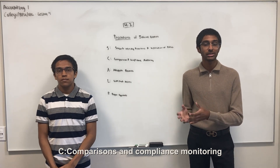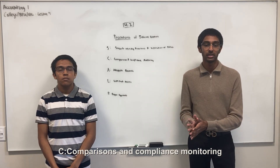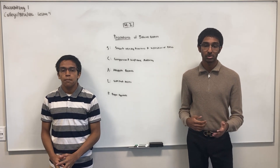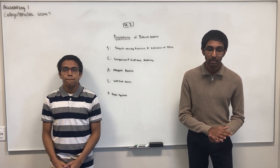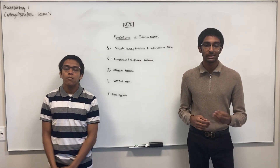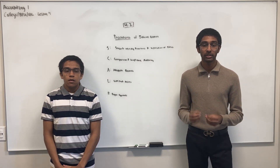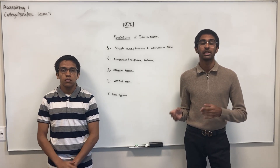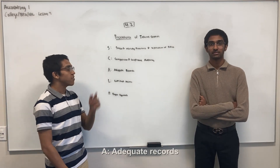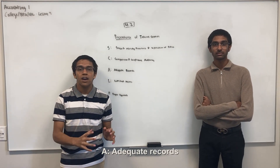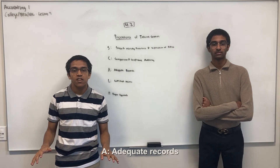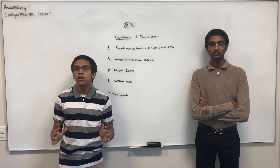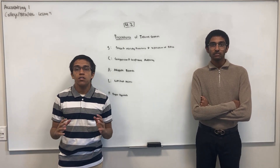The C in SCALP stands for comparisons and compliance monitoring, which separates the processing and monitoring of transactions across multiple departments — for example, signing checks, recording and reconciling bank statements (the controller's responsibility), cross-checking with the budget, and exception reporting. Compliance monitoring also takes the form of external auditing to ensure everything is legal. A stands for adequate records, which includes backup and hard copies of business transactions, often numbered in sequence so everything is processed accurately and gaps in the data are easily noticed.